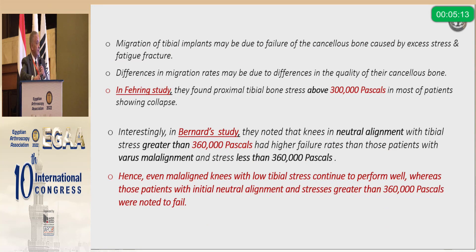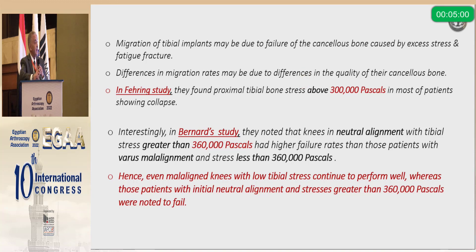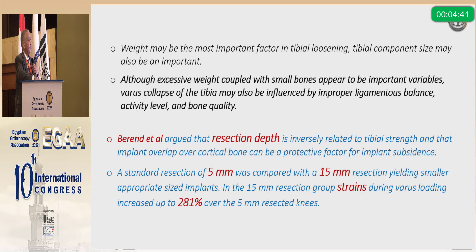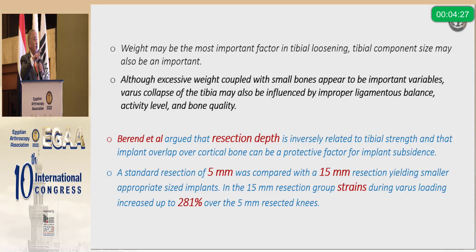Migration of the tibial implant due to failure of the cancellous bone was studied by Fehering, who found the stress threshold before failure is approximately 300,000 Pascal. Bernard's more extensive study found the figure to be 360,000 Pascal — meaning that even a malaligned knee with low tibial stress will continue to perform well, whereas patients with initial neutral alignment but high stresses greater than 360,000 Pascal will fail. Although excessive weight coupled with a small bone or small tibial component was more prone to failure and varus collapse in obese patients, Bernard also argued the risk of depth of resection.